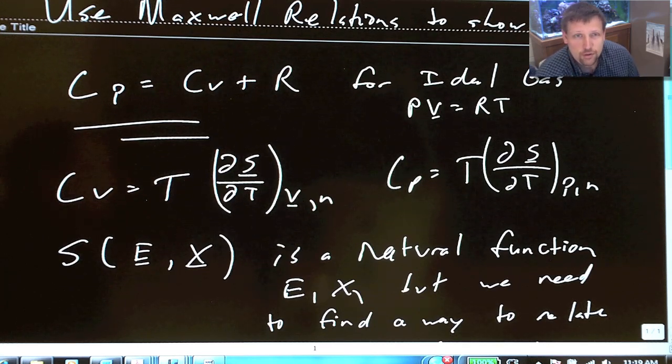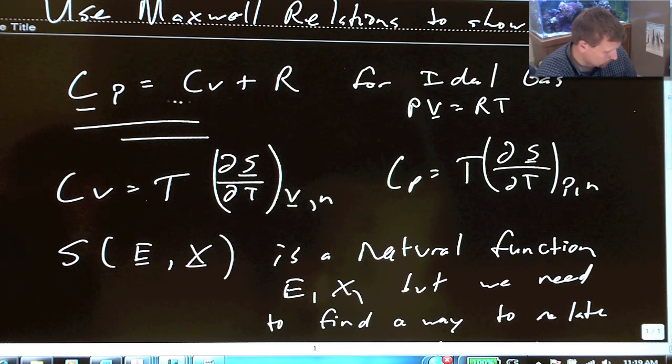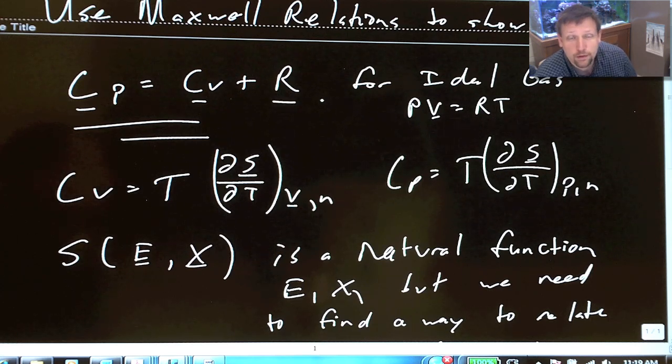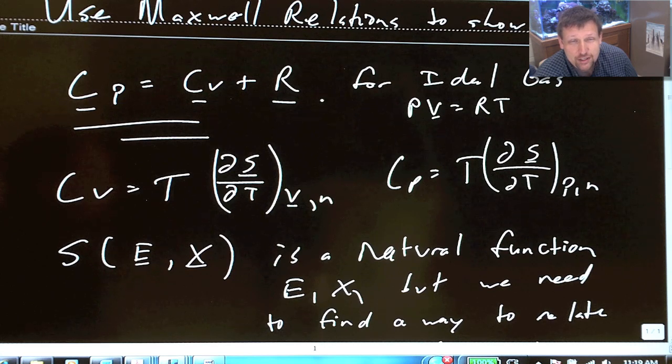Hi, so we're going to show now that Cp equals Cv plus R for an ideal gas equation of state by using Maxwell relations, starting with entropy and differential entropy.